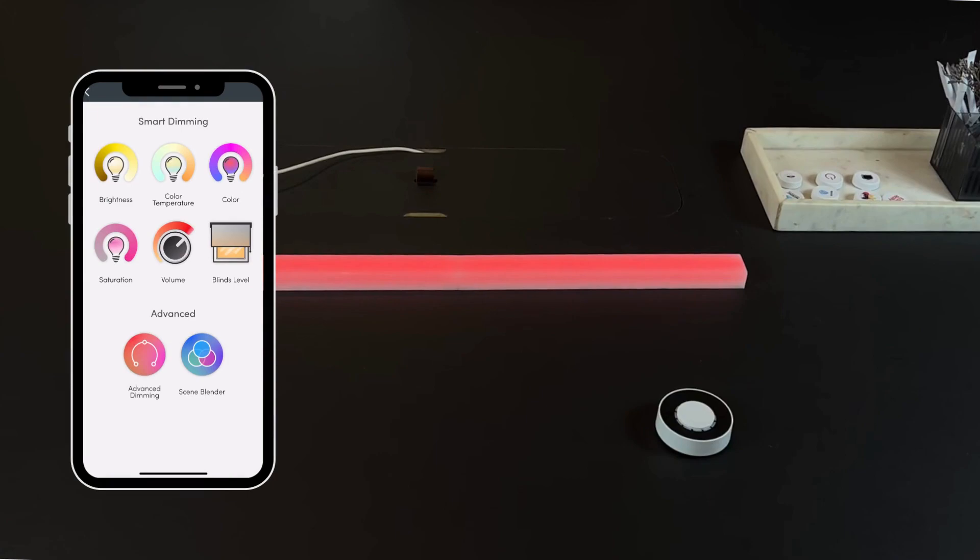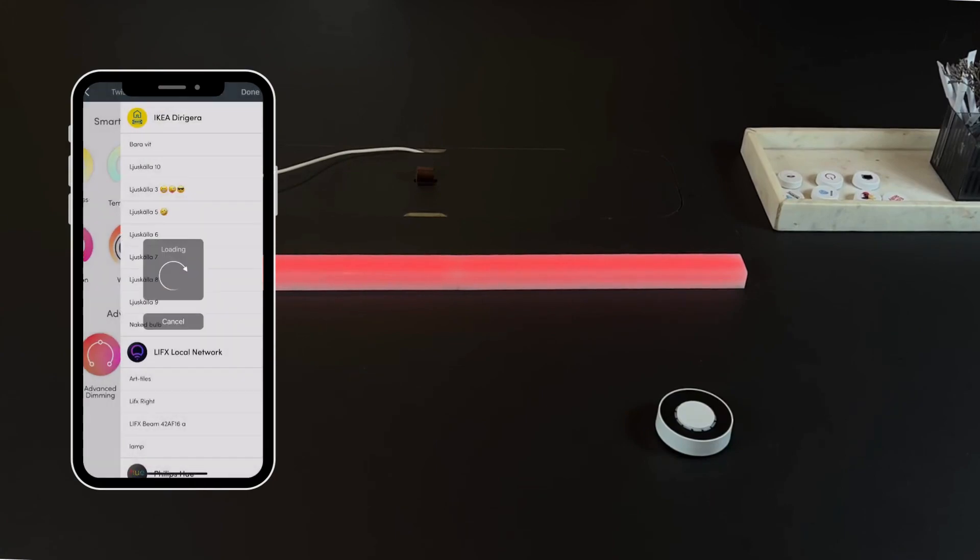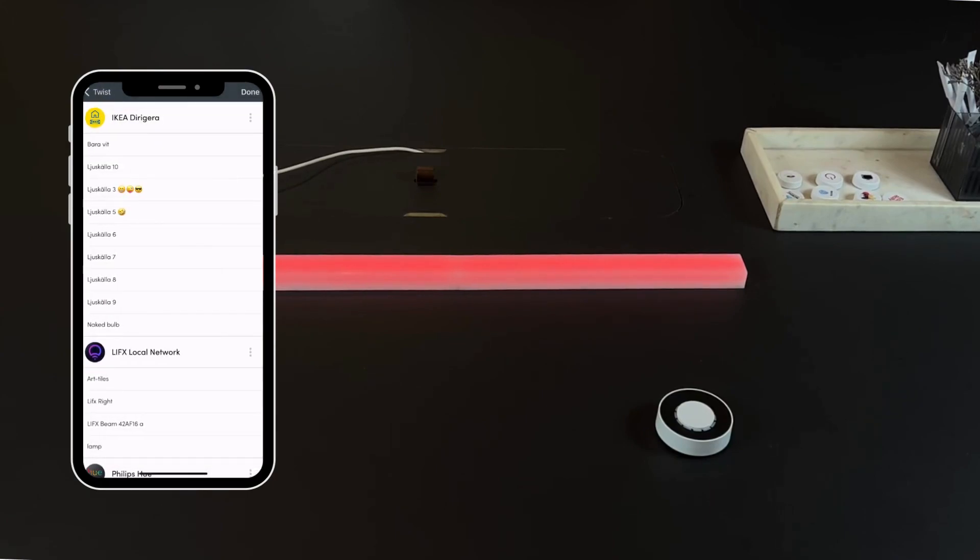We will start showing you the Smart Dimming option. Let's choose the Brightness option to control the brightness level of LIFX Lights. If you haven't already set up your LIFX Lights, press the Setup button and follow the instructions on screen.